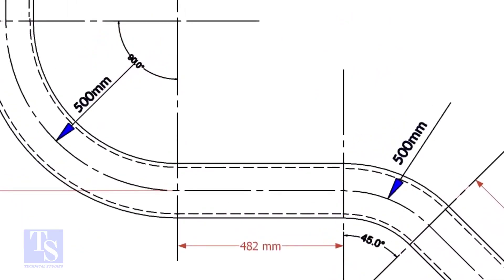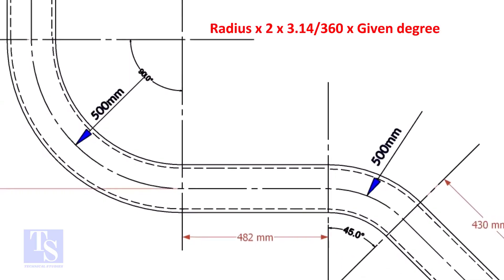Let us calculate the pipe length for the 90 degrees. The formula is: radius multiplied by 2, multiplied by 3.14, divided by 360, multiplied by the required degree.